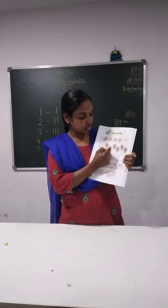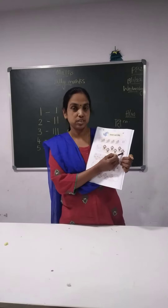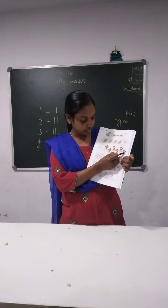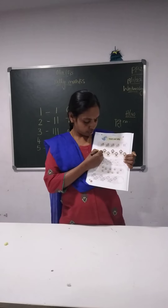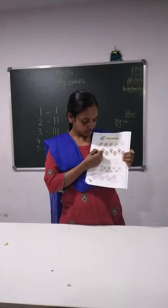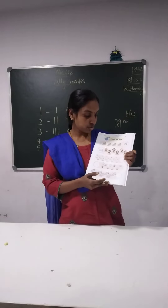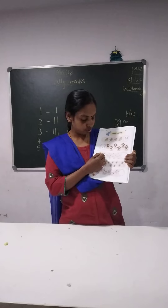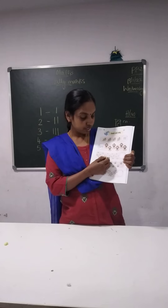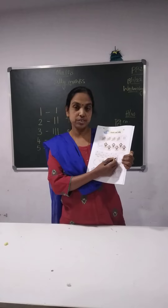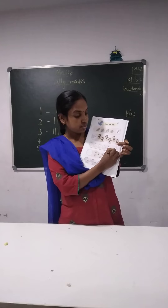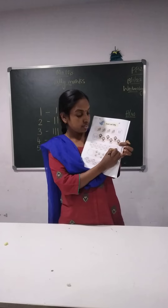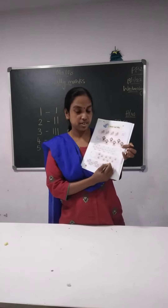And next here it is 1, 2, 3, 4, 5, 6 — we have 6 here. So what we have to do? We have to draw 1, 2, 3, 4, 5 and then 1, 2, 3, 4, 5, 6, 7, 8, 9, 10.